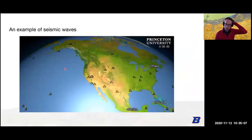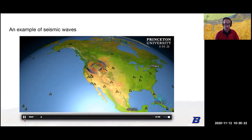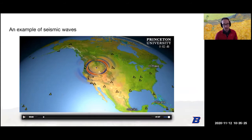Here's an example of a computed wave field. Since many people on this call may have been here last March, this is the earthquake that shook us all on March 31st. It's a numerical simulation. You can see it originating from Idaho and then propagating out much like if you dropped a rock into a pool.